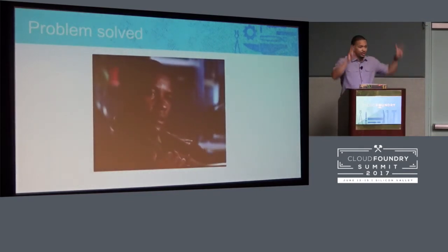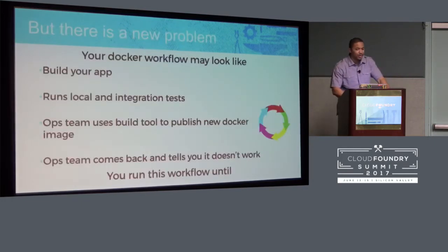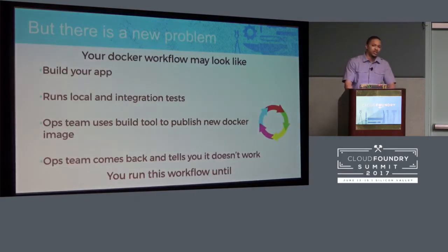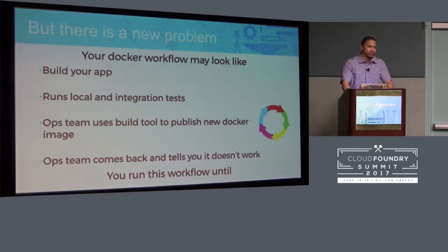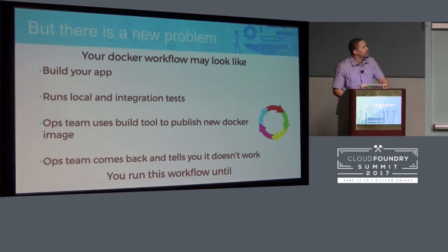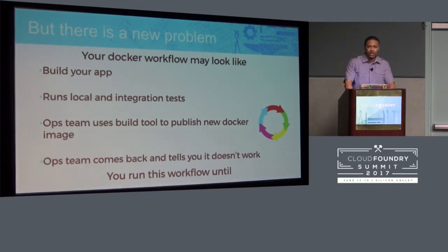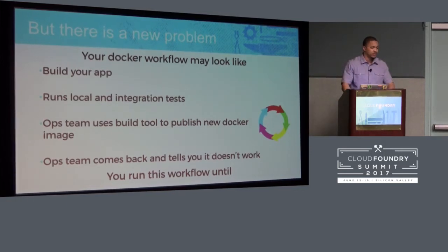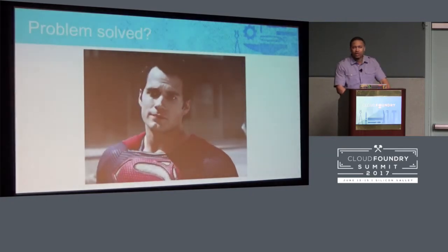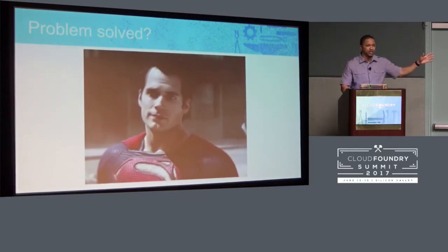Then Docker came out and was supposed to solve the problem, but now there's a new problem — your workflow changed. You have to adopt how you can actually help DevOps and collaborate. If you don't have a DevOps team, that person might be you. So you build your app, run local integration tests, then DevOps uses something like Jenkins to build it and push your Docker image automatically. But did we solve the problem? Now there are more steps.